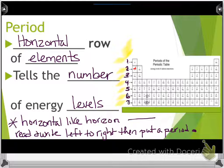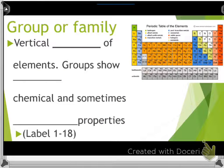Another way to remember about a period is you read and write from the left to right, just like this period goes across the periodic table. It starts in the left and goes all the way to the right. At the end of a sentence you have a period. When you read from left to right, you have a period on the periodic table.